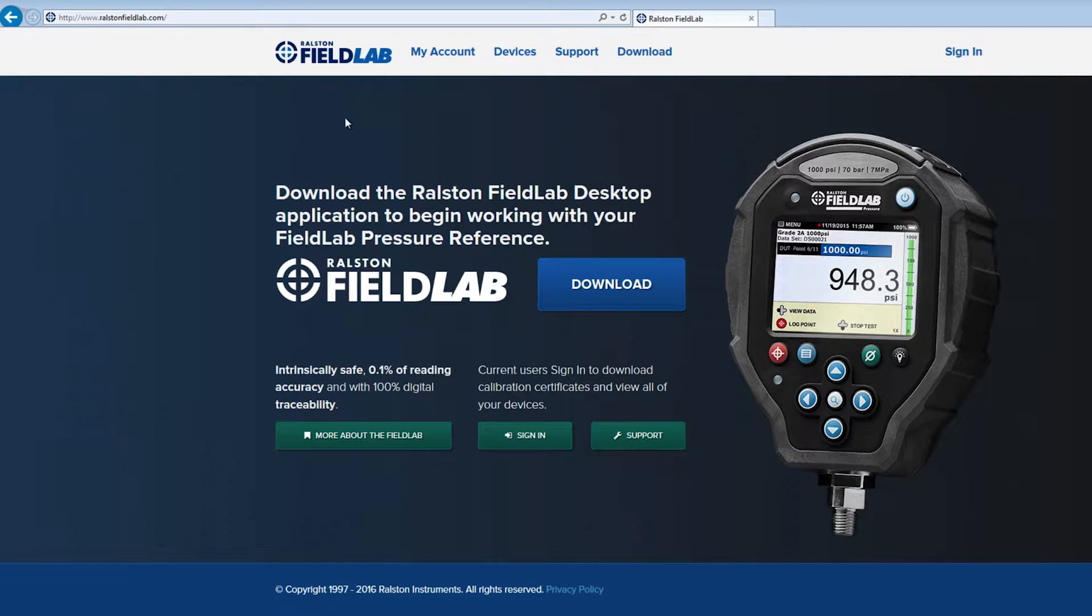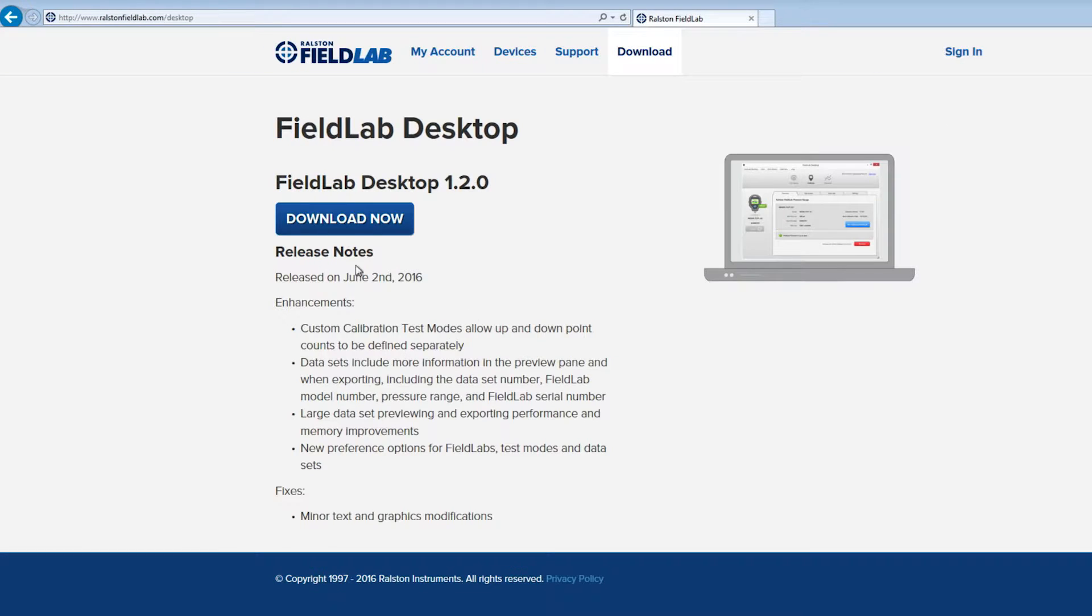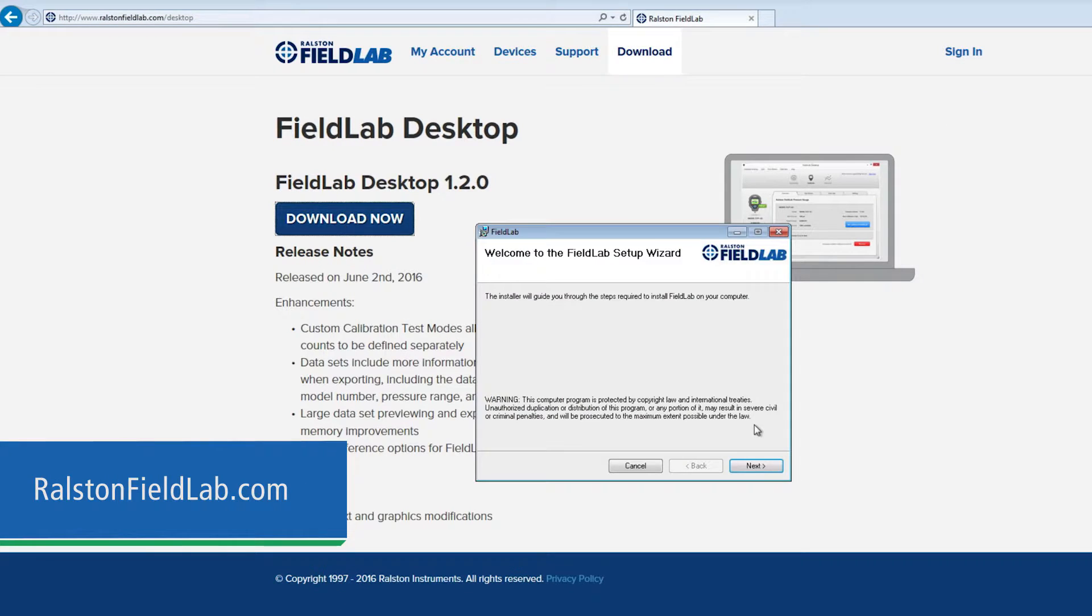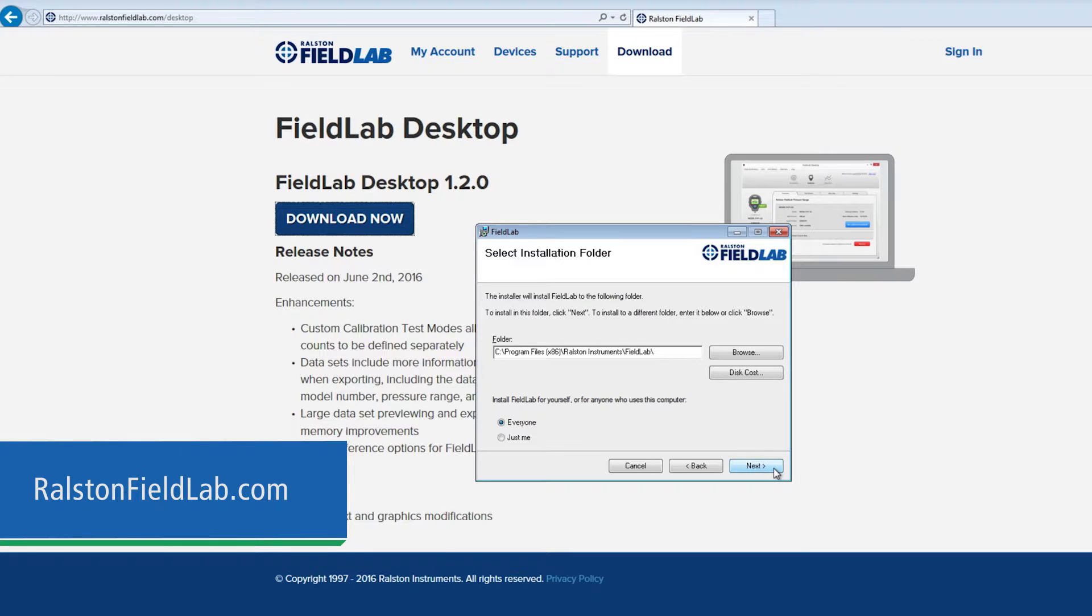First, you'll need to download and install the Field Lab desktop software on a Windows-based computer from RalstonFieldLab.com. Follow the on-screen instructions to get your Field Lab set up and linked to your PC.